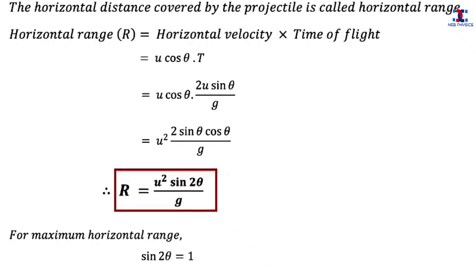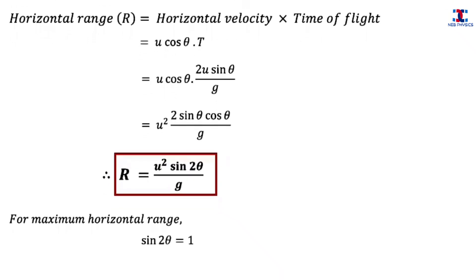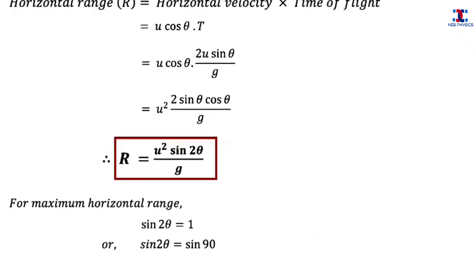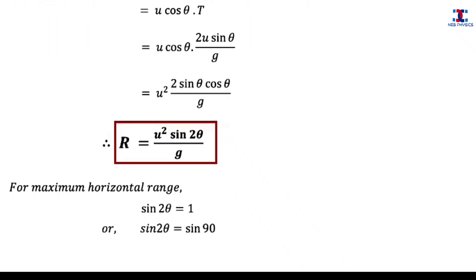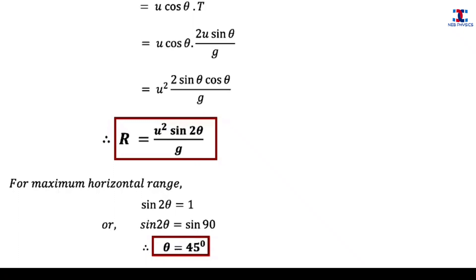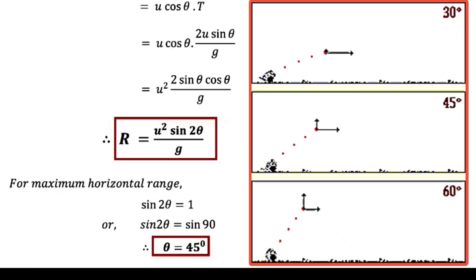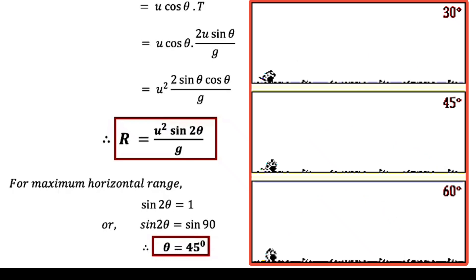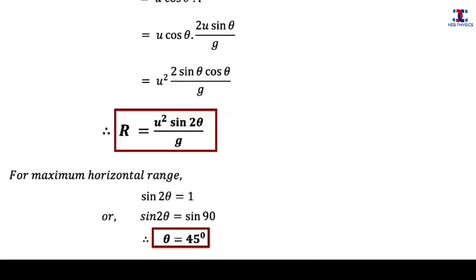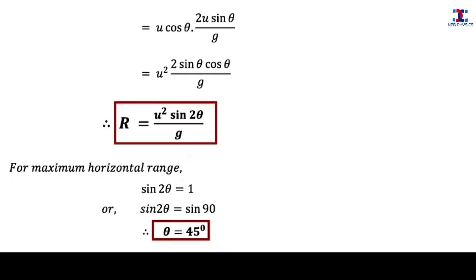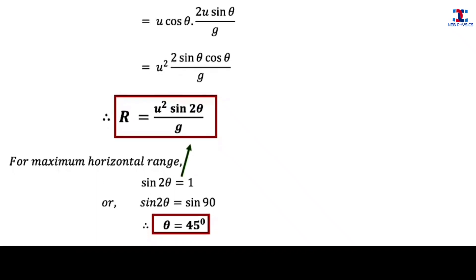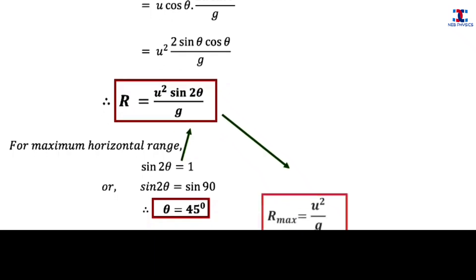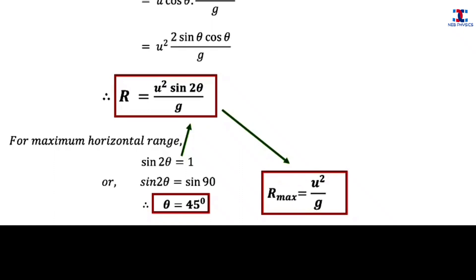For the horizontal range to be maximum, the value of sin 2theta must be maximum, which equals 1. So sin 2theta equals sin 90°, giving theta equals 45°. This is quite interesting because it shows that a projectile covers the longest horizontal distance if it is fired at an angle of 45° with the horizontal. Substituting sin 2theta equals 1 into the range equation, we get the maximum range R_max equals u² divided by g.